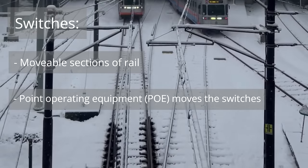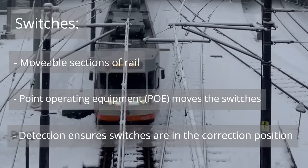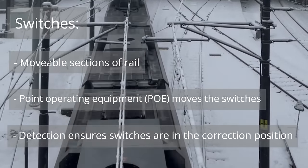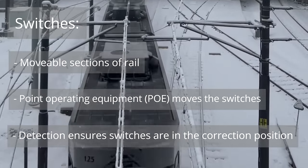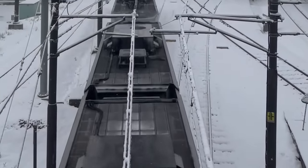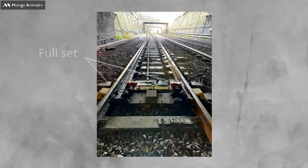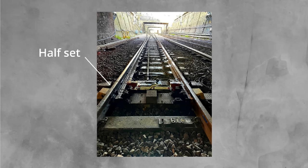Other equipment, known as detection, is used to ensure that the switches are fully closed in either position. This is key to avoid trains derailing when travelling over sets of switches. When we talk about switches, we refer to them as sets. A pair of switches is known as a full set. A half set is one switch. It is common that half sets are replaced individually as and when issues or defects arise.